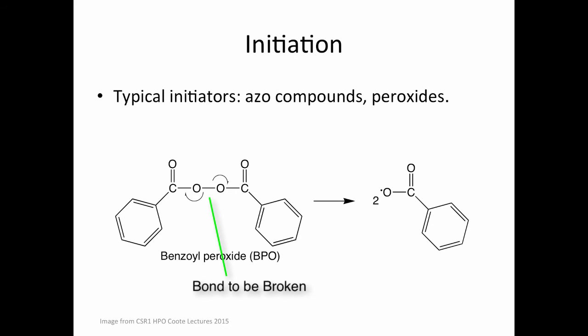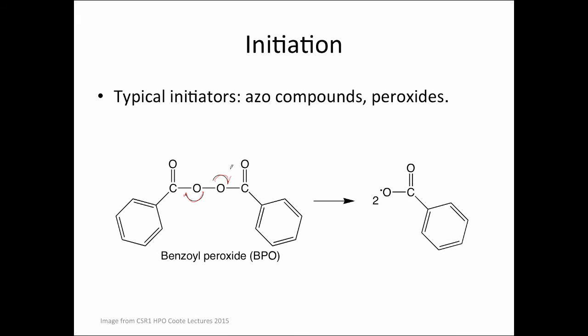Note that the chemical bond is made from two electrons. As shown by the curly arrows in this diagram here, one electron goes to each of the oxygen atoms, creating what we call a radical.